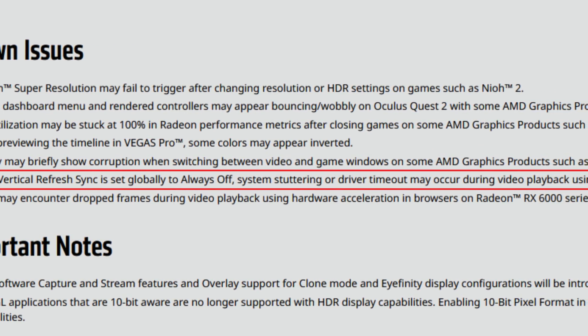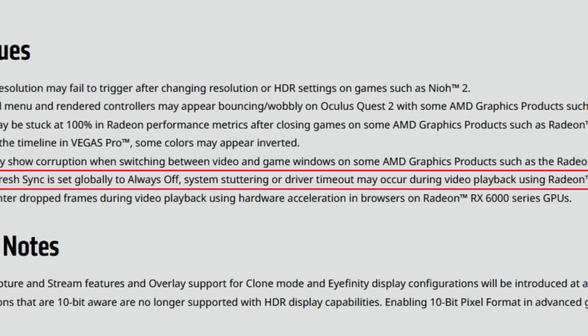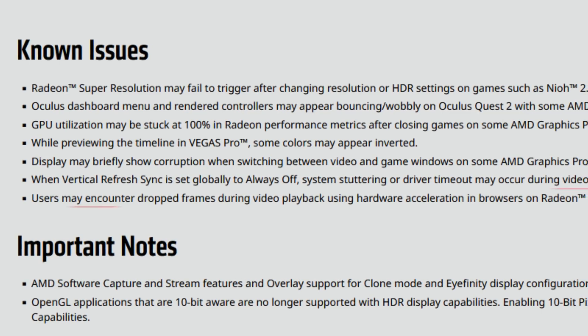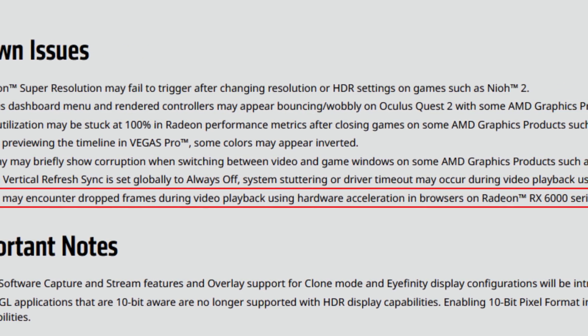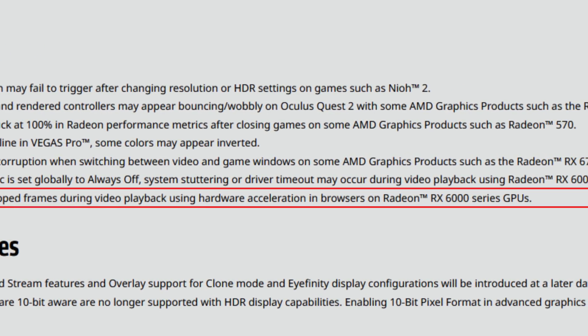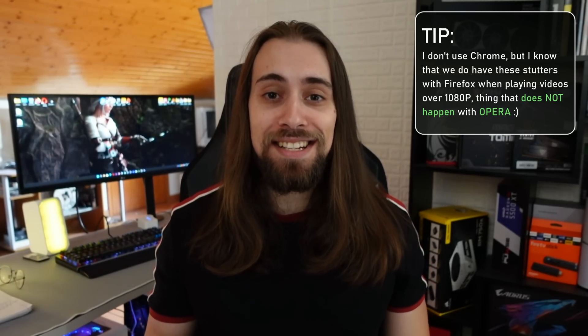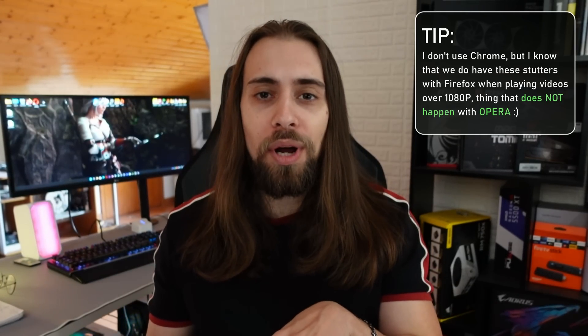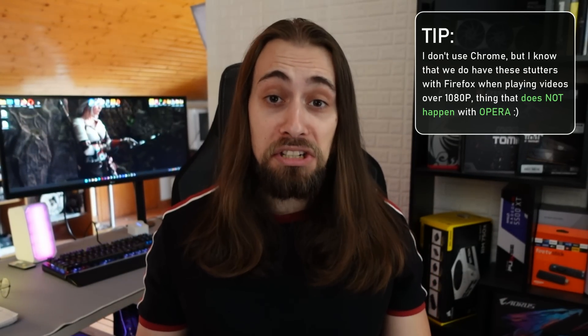System stuttering or driver timeout may occur during video playback using Radeon RX 6000 series GPUs. Users may also encounter dropped frames during video playback using hardware acceleration in browsers on Radeon RX 6000 series GPUs. This happens with Mozilla Firefox and Google Chrome, but interestingly it does not happen on Opera, even though Opera is based on Chromium — which is strange.